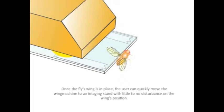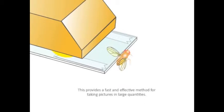Once the fly's wing is in place, the user can quickly move the Wing Machine to an imaging station with little to no disturbance in the wing's position. This provides a fast and effective method for taking pictures in large quantities.